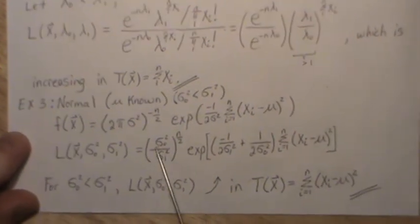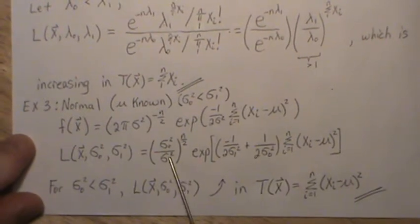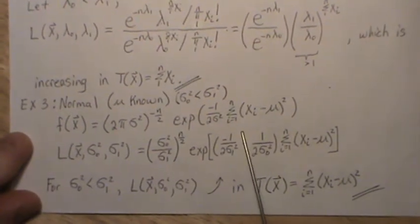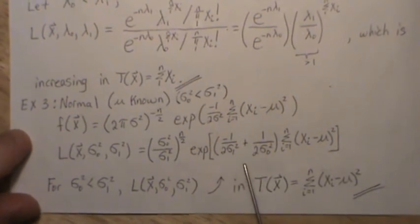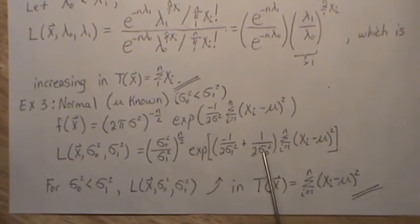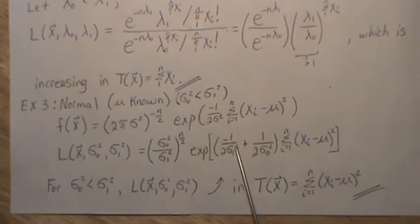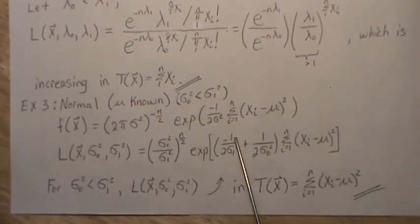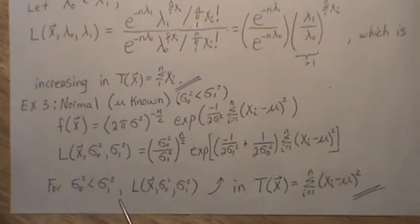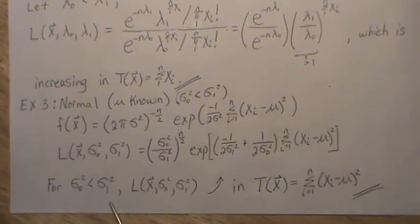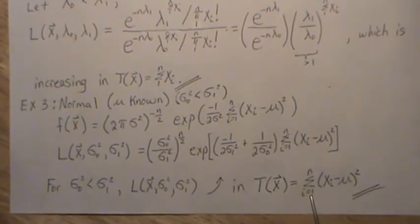And it boils down to this. So this is a constant, e to the this. Now this has to be positive for this to be increasing, and this is positive because σ₁² is bigger than σ₀², which makes this fraction smaller than this. When you add them, you get a positive number.